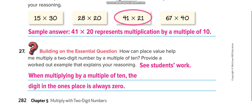And the last question. How can place value help me multiply a 2-digit number by a multiple of 10? Provide a worked out example that explains your reasoning. When multiplying by a multiple of 10, the digit in the 1's place is always 0. Now, you guys have to give me an example here.